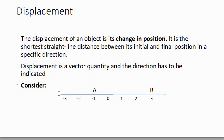We have a number line shown below with positions A and B, starting from negative 3 and going all the way to 3. Position A is at negative 1 and position B is at 3.